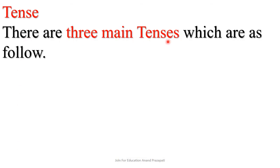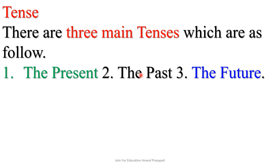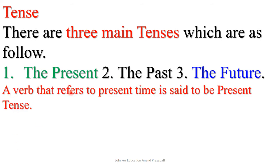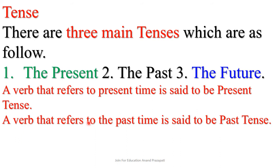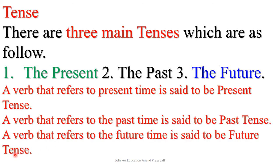There are three main tenses: the present, the past, and the future. A verb that refers to present time is said to be present tense. A verb that refers to past time is said to be past tense. Similarly, a verb that refers to future time is said to be future tense.